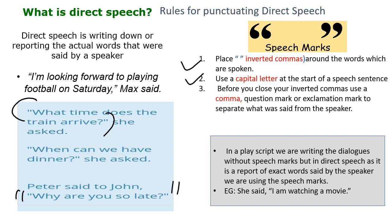Second rule: use a capital letter at the start of a speech sentence. Third rule: before you close your inverted commas, use a comma, question mark, or exclamation mark to separate what was said from the speaker. If the sentence is in question form, put a question mark and then close the inverted comma. Remember, in a play script we write dialogues without speech marks, but in direct speech, as it is a report of the exact words said by the speaker, we use speech marks.